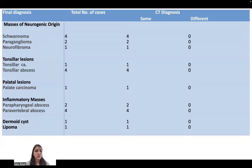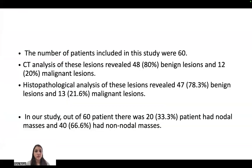Masses of neurogenic origin — schwannoma, paraganglioma, and neurofibroma — were all correctly diagnosed on CT. Tonsillar lesions including tonsillar carcinoma and tonsillar abscess were all correctly diagnosed on CT. Palatal lesions — palatine carcinoma present in one case — were correctly diagnosed on CT. Inflammatory masses including parapharyngeal and paravertebral abscess were also correctly diagnosed on CT. Dermoid cyst and lipoma were also correctly diagnosed on CT.